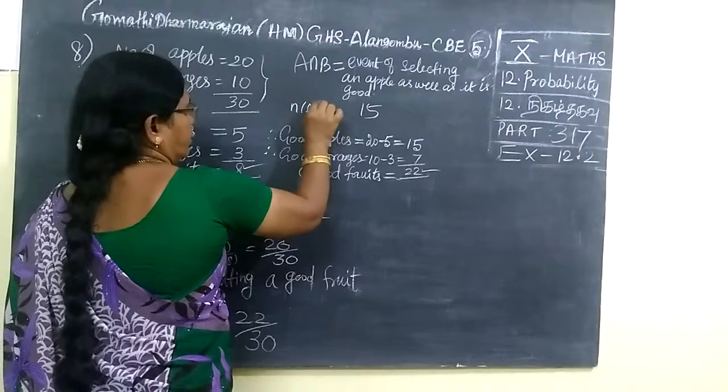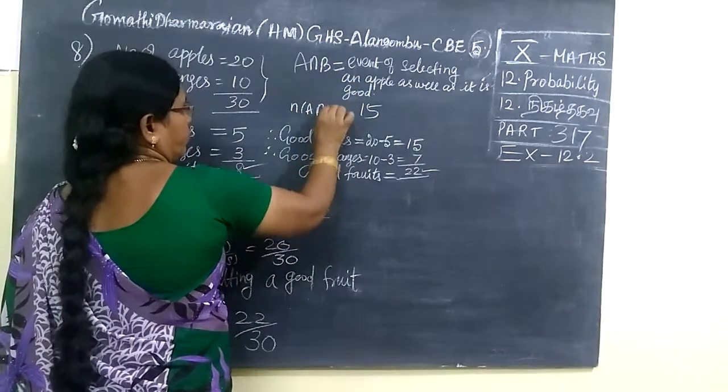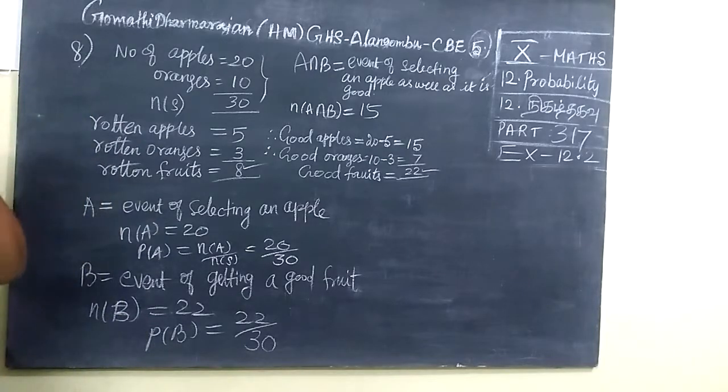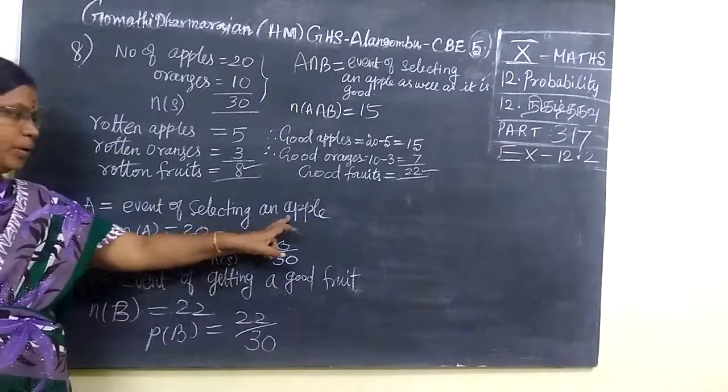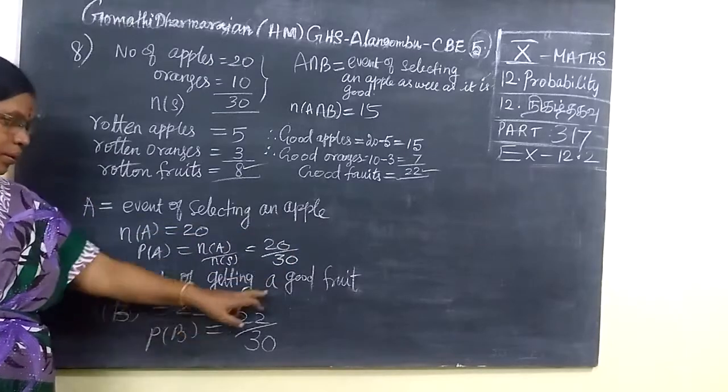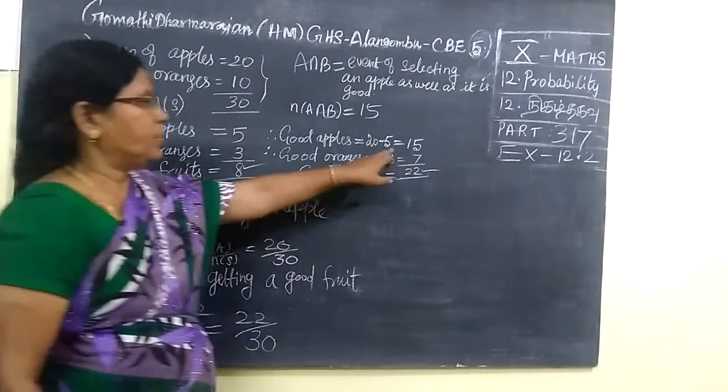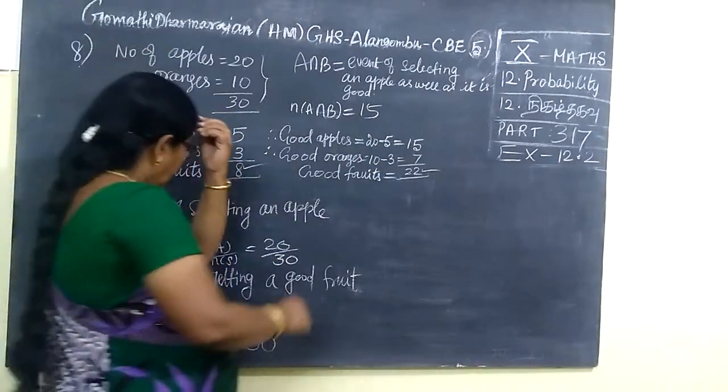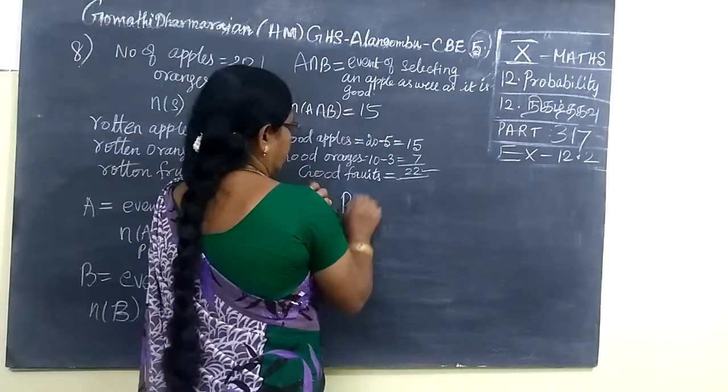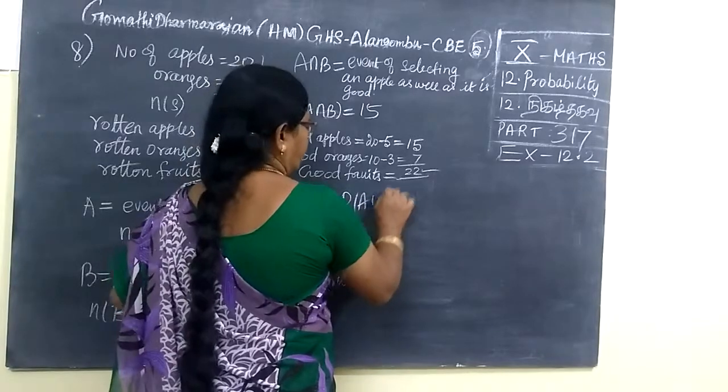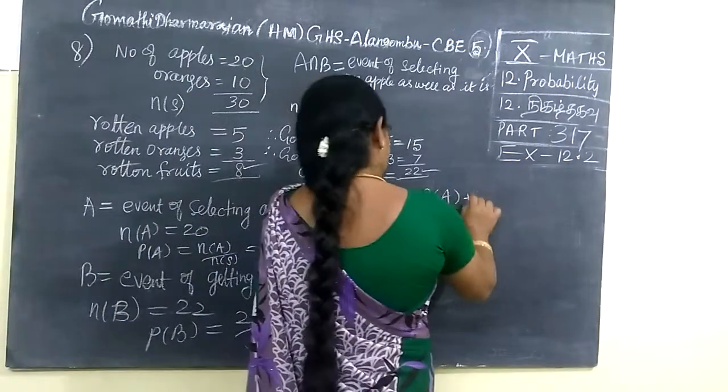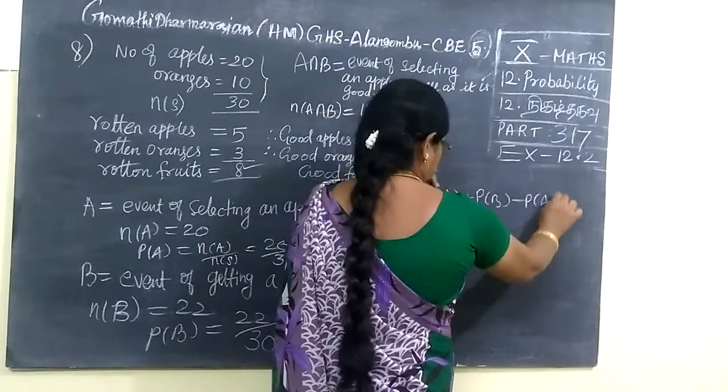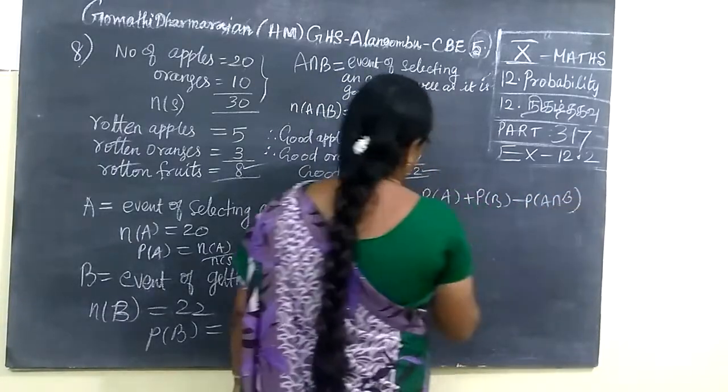N of A intersection B equal to 15. Intersection means it should be an apple as well as it is a good one. That is 15. So N of A intersection B is 15. Now by addition formula, A union B equal to P of A plus P of B minus P of A intersection B.